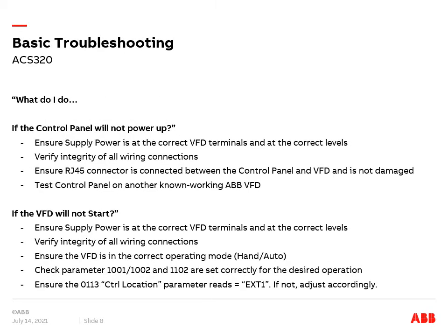You might ask yourself some of the following questions while troubleshooting an ACS-320. What do I do if the control panel will not power up? Ensure the supply power is at the correct VFD terminals and at the correct levels. Verify the integrity of all your wiring connections. Ensure that the RJ45 connector is connected between the control panel and the VFD and is not damaged. And test the control panel on another known working ABB VFD.